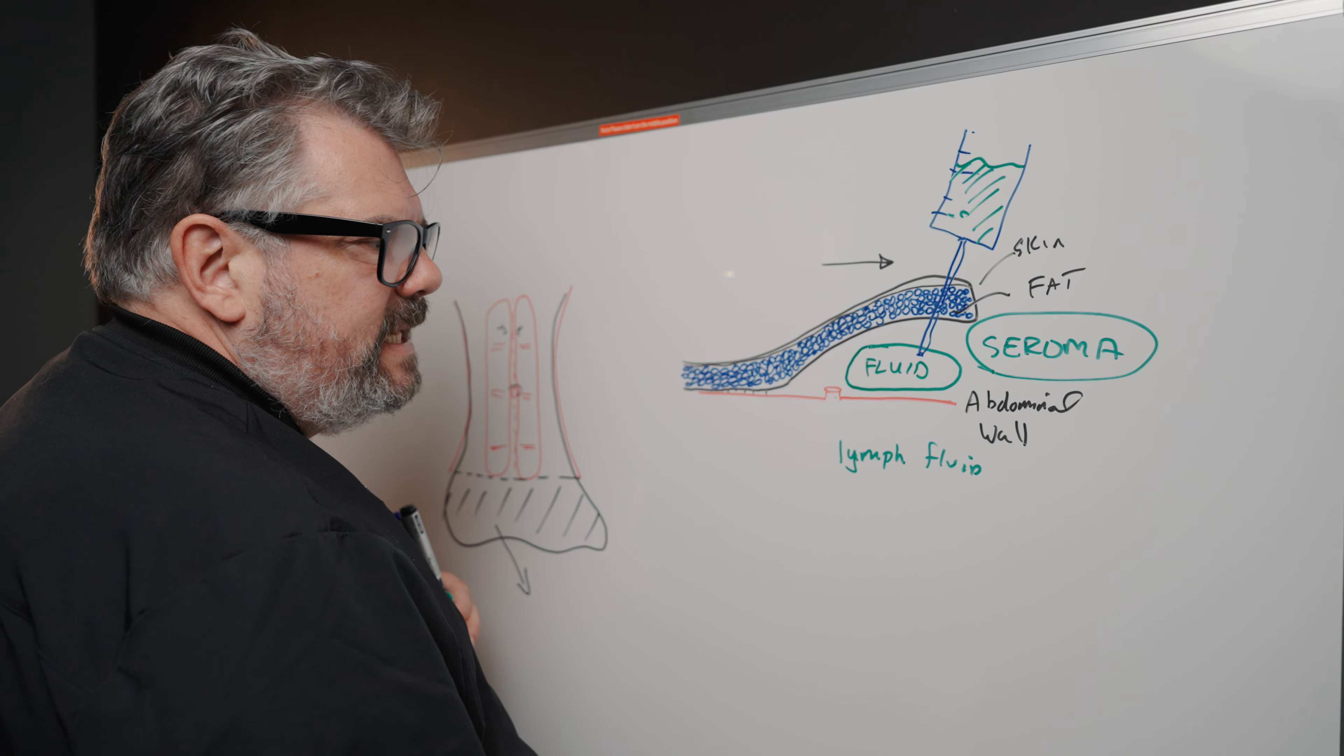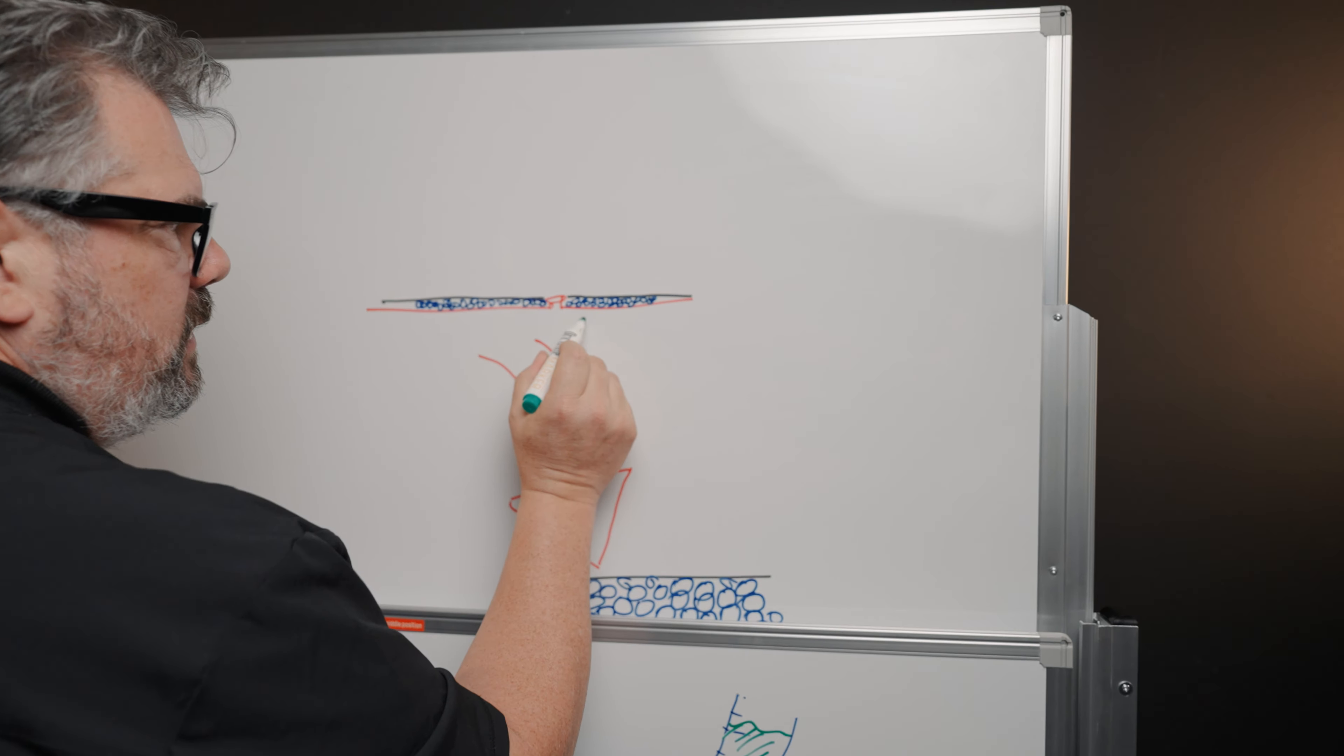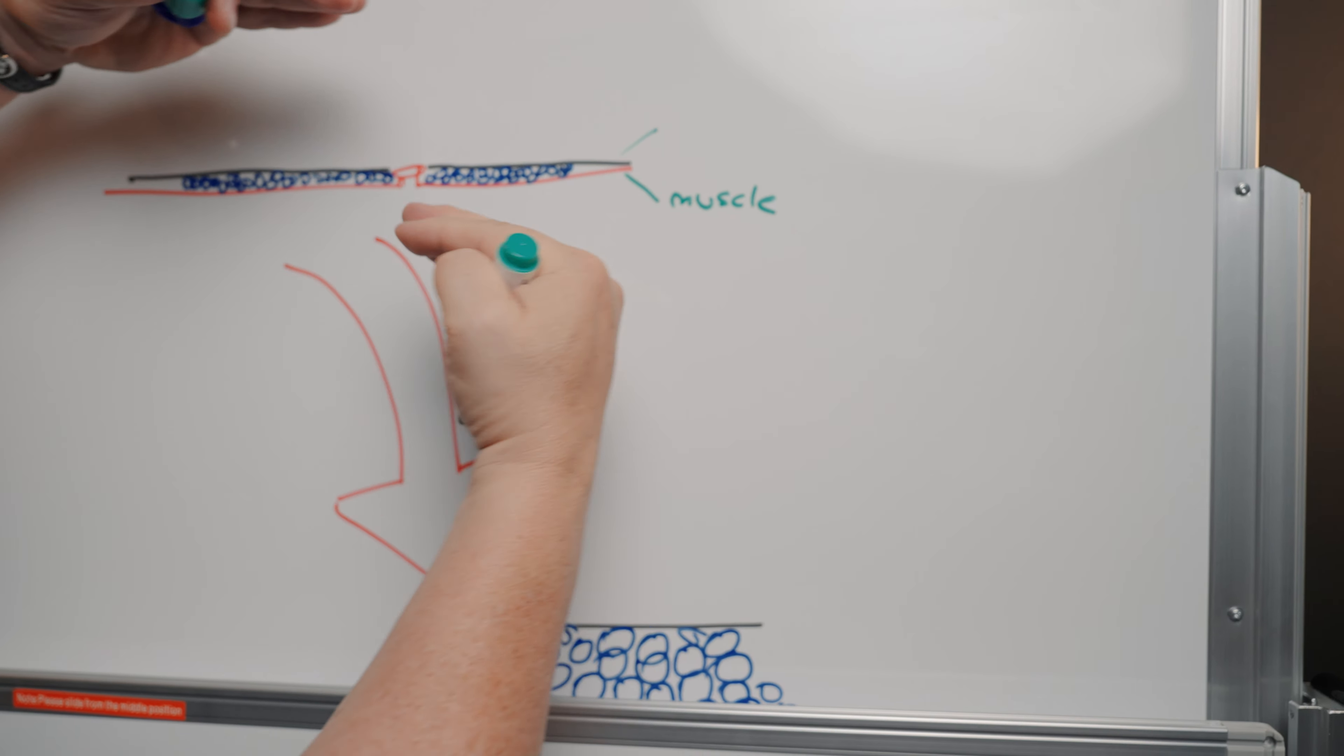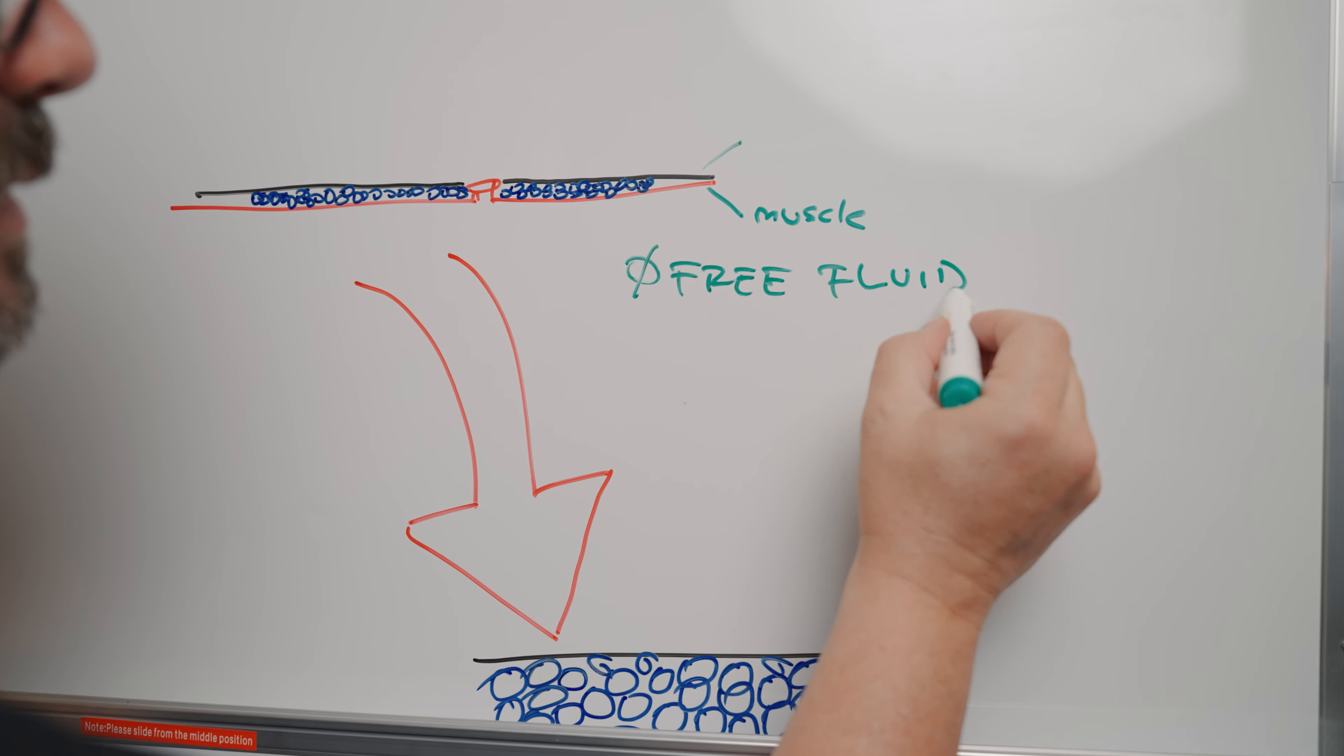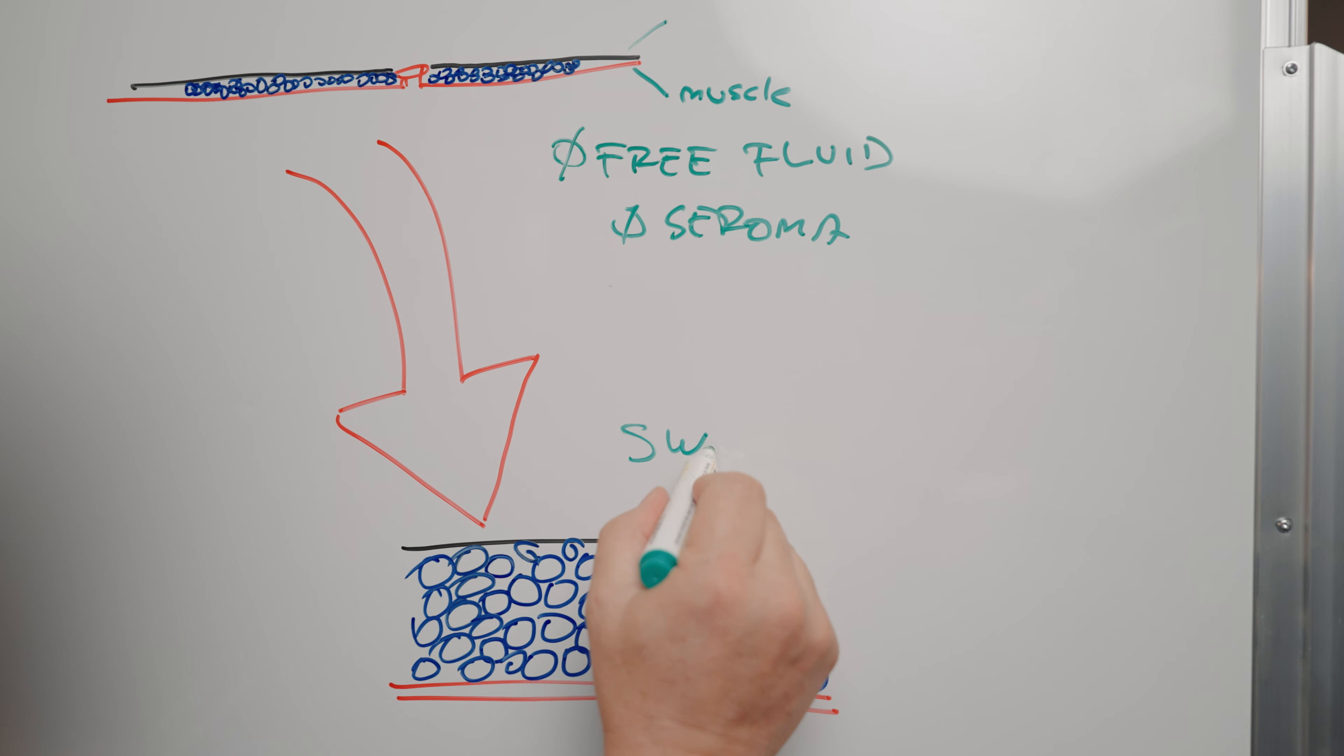That fluid is very different than actual swelling, which is something different. Let me explain what swelling is then. So this is after a tummy tuck now, where you've got your skin, you've got your muscle here. You've got your skin, you've got some fat, and everything is stuck back down. So in this situation, there's no free fluid. There's no free fluid, meaning there's no seroma there. There's no fluid collection. But if we look at it at a little bit more detail, now let's look at where the fluid is for swelling.